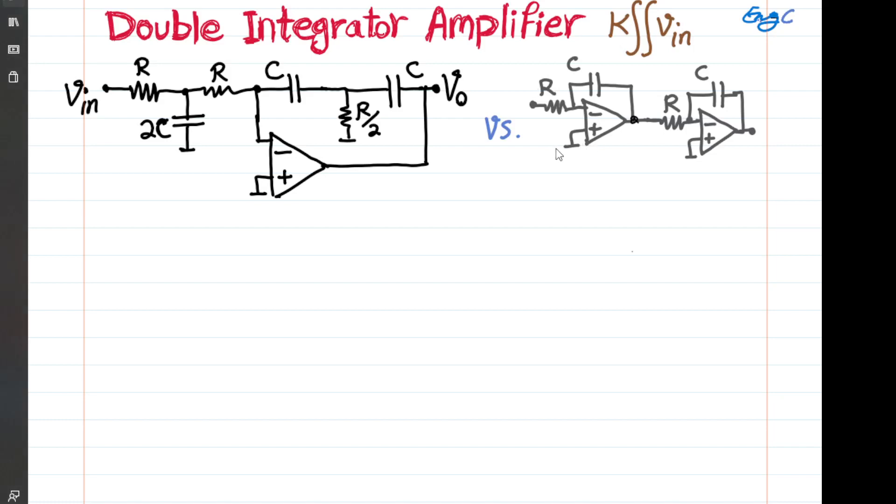A traditional way of designing a double integrator amplifier requires two op-amps, as you can see on the right hand side. Here I'm showing you another version that implements the double integration using just one op-amp.